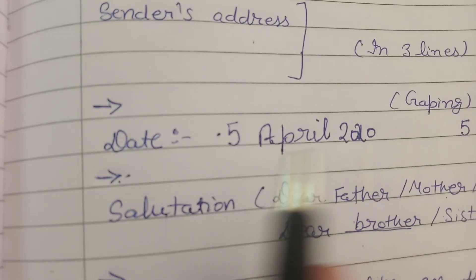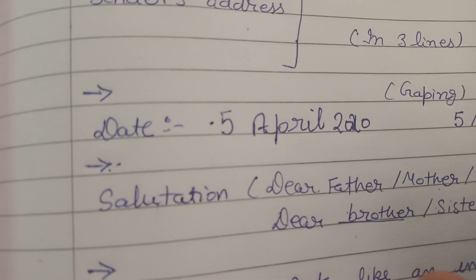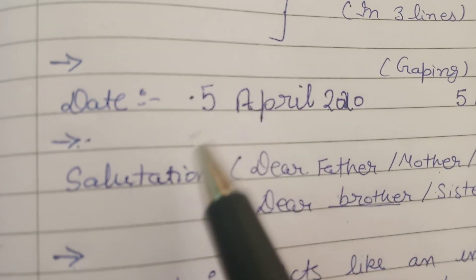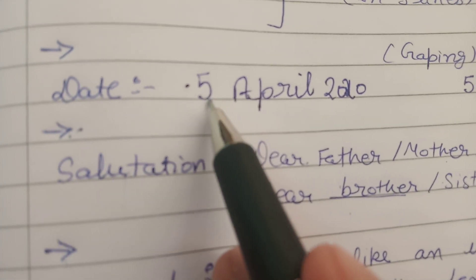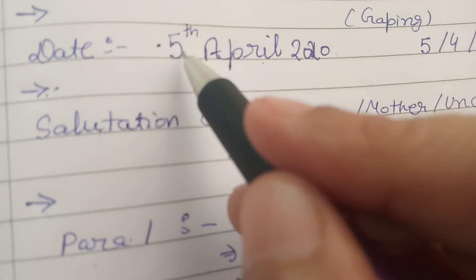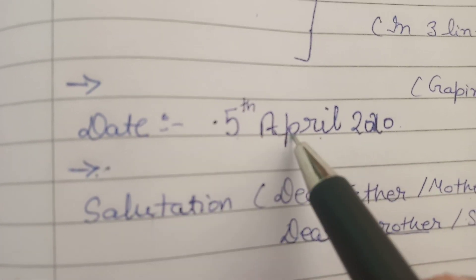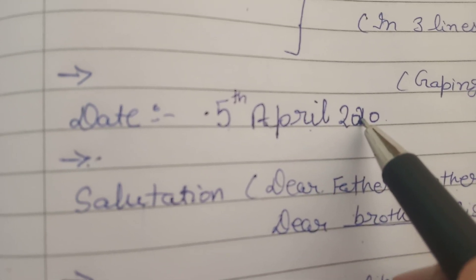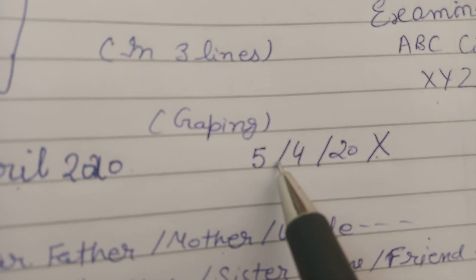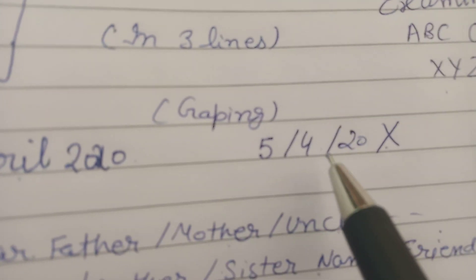After the address, you must leave one line blank — that is compulsory and part of the format. If you do not leave one line blank, your format marks will be cut, and format is worth 2 marks. Then comes the date. Many students write the date incorrectly. You have to write it completely, like '5th April 2020'. Do not use short forms like 'APR' — use the full name of the month. You cannot write it as '5/4/20'. These are mistakes students continuously make, so take care of this.